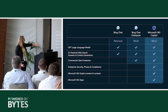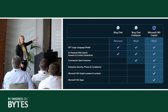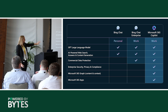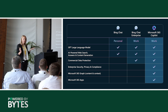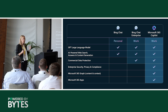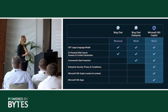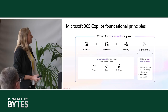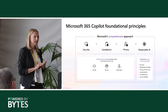This chart shows the difference: Bing Chat is open — anything shared there could be shared across the internet. Bing Chat Enterprise is where your commercial data is protected and not shared outside your organization's perimeter. Then Copilot builds on those enterprise security, privacy, and compliance foundations, plus the Microsoft Graph and the apps you use every day.